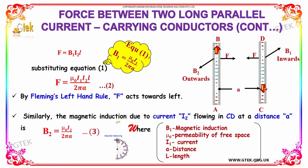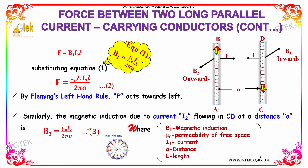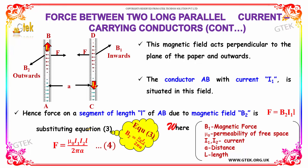Similarly, the magnetic induction due to the current I2 flowing in CD at a distance A is given by B2 equal to μ₀ into I2 divided by 2πA. Before calculating the force, we need to check the magnetic field B2, which is perpendicular to the plane of the paper.